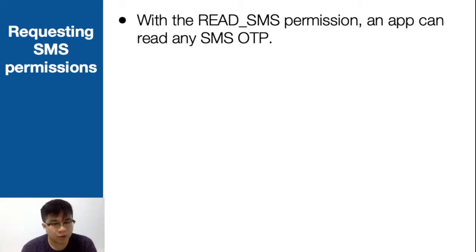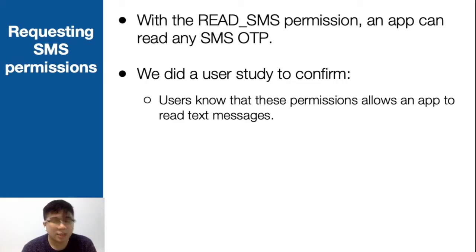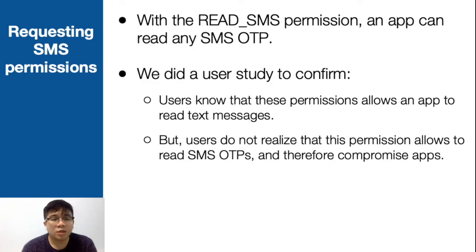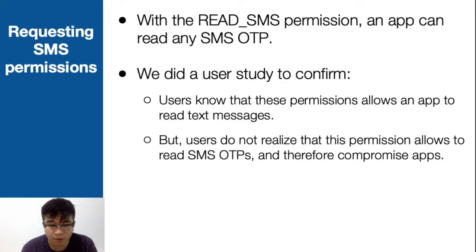We actually did a user study to confirm this — we want to verify if users actually understand. The result shows users do understand that this permission will allow an app to read text messages. However, users do not realize that this permission also allows reading SMS OTPs, and therefore compromises accounts on apps that use SMS OTPs to authenticate their users. Basically, users understand the direct cause of giving this permission, but not the indirect cause. If you're interested in all the details, please check our paper.